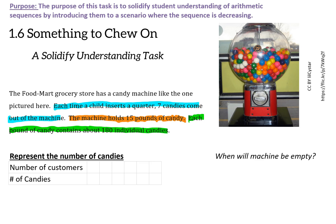To represent the total number of candies, I need to combine the highlighted information. If there are 15 pounds of candy in the machine and each pound has 180 candies, then 15 times 180 equals 2,700 candies in the machine.